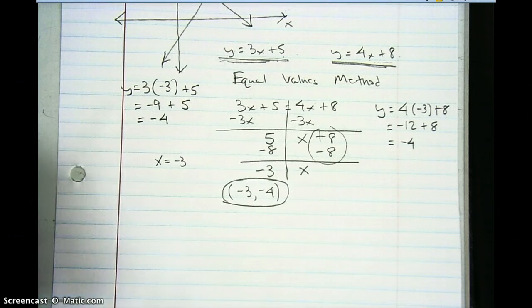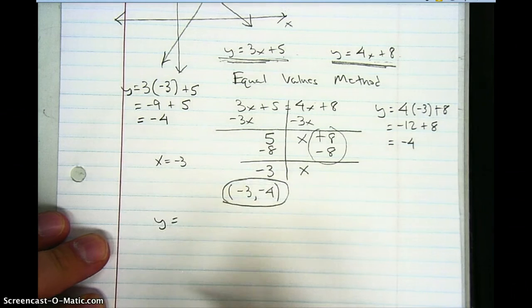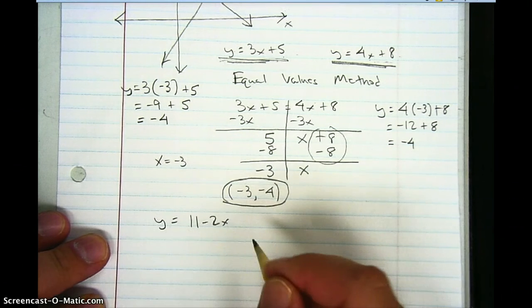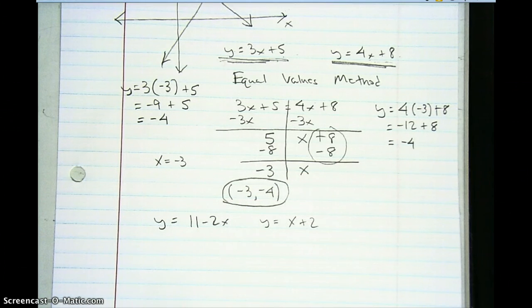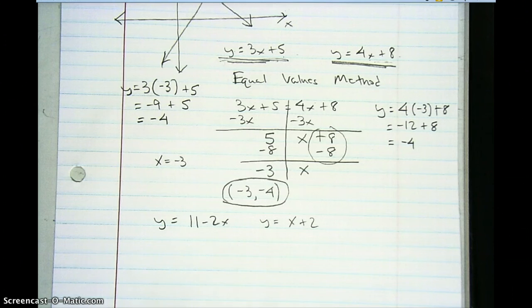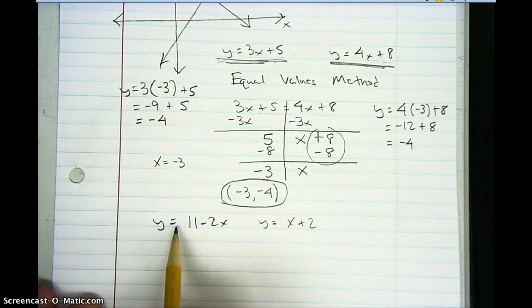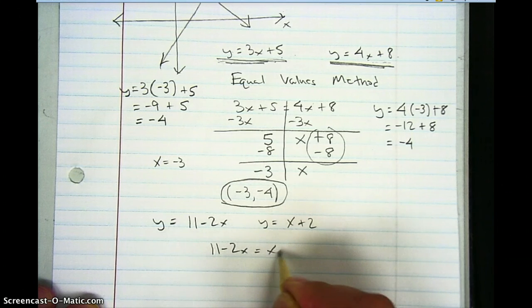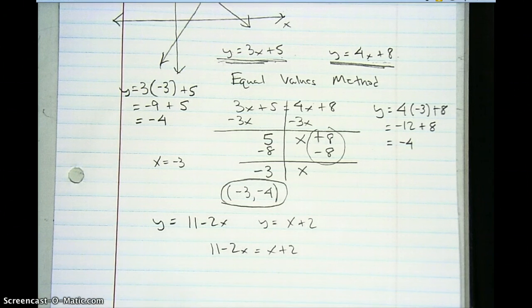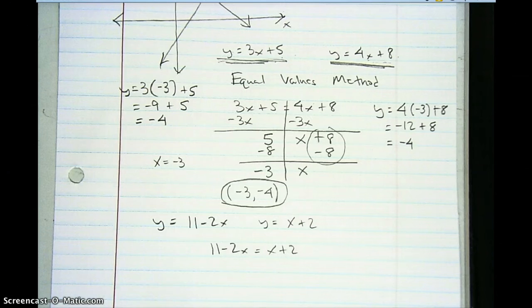Now I'm going to have you try one. The next problem is y equals 11 minus 2x and y equals x plus 2. Use the equal values method to solve this. Since y equals both expressions, the point of intersection is when 11 minus 2x equals x plus 2. Pause the recording and see if you can solve it.